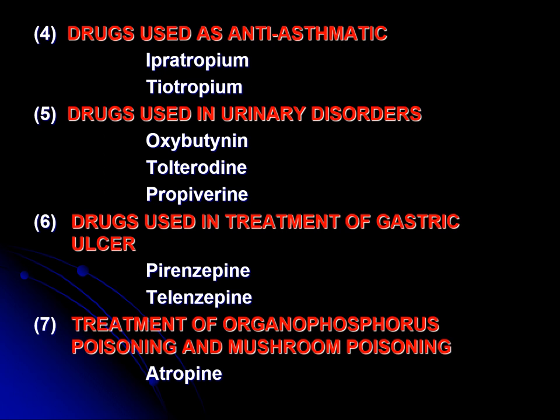Another group is used for different urinary disorders. When there is urgency or frequency of micturition due to inflammation or other spasms of the urinary tract, we can use drugs like oxybutynin, tolterodine, and propiverine. These are highly selective anti-cholinergic drugs.